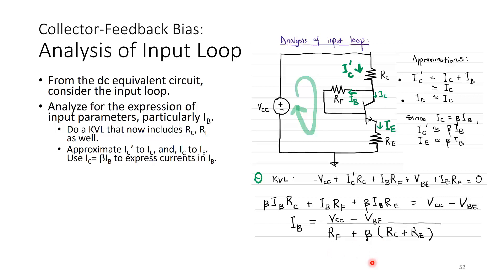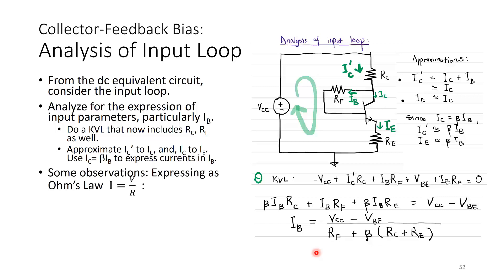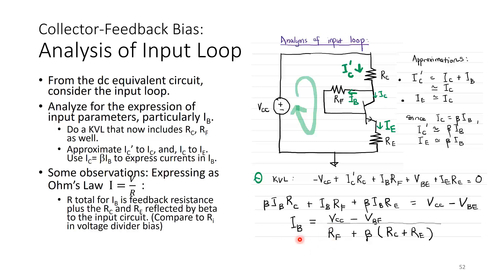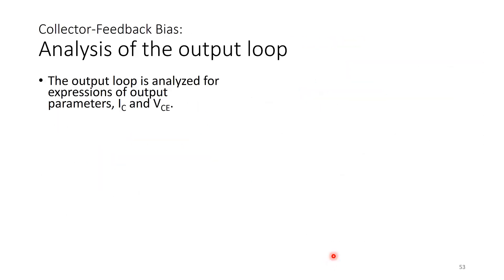Some observations: expressing IB as Ohm's law, just as before, R total for IB is the feedback resistance RF, plus RC and RE reflected by beta to the input circuit — similar to the reflected resistance seen in the voltage divider bias analysis. Now, analysis of the output loop is performed to find expressions for the output parameters IC and VCE.